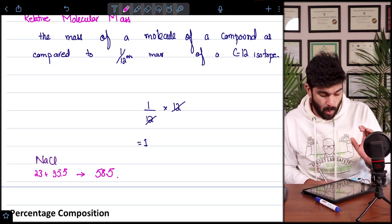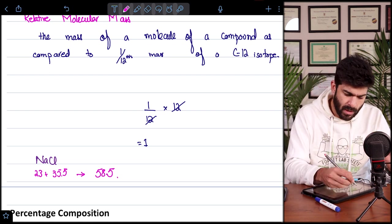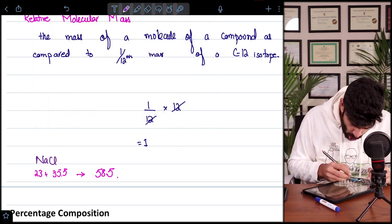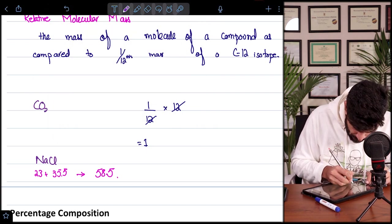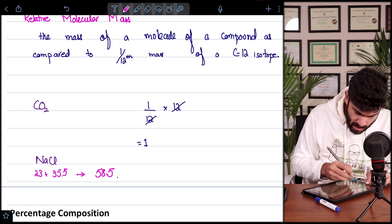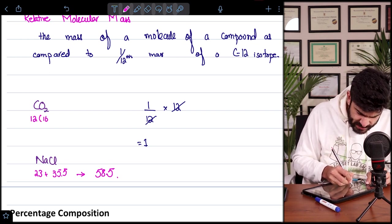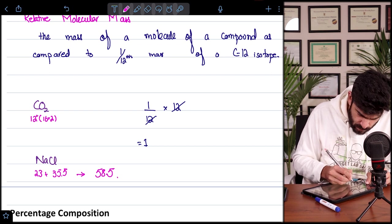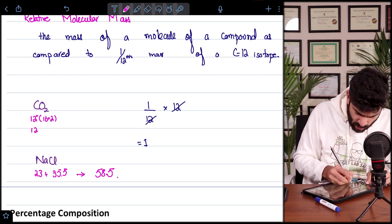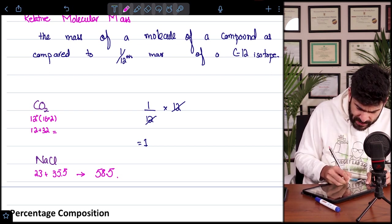But before that, let's talk about carbon dioxide as well. Carbon is 12, oxygen is 16 into 2. That's 12 plus 32, that makes it 44.